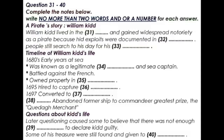Kidd took his most valuable prize, the Armenian ship Queda Merchant, in January 1698, and scuttled his own unseaworthy Adventure Galley. When he reached Anguilla in the West Indies in April 1699, he learnt that he had been denounced as a pirate. He left the Queda Merchant at the island of Hispaniola, where the ship was possibly scuttled. In any case it disappeared with its questionable booty, and he sailed in a newly purchased ship, the Antonio, to New York City, where he tried to persuade the Earl of Bellarmont, then colonial governor of New York, of his innocence.